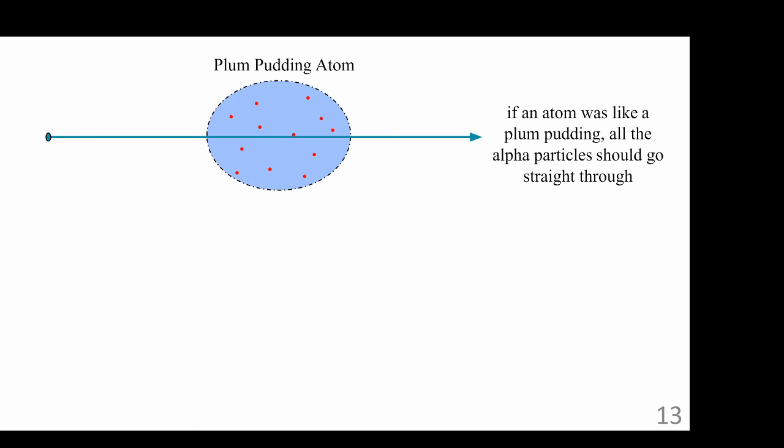Of course, Rutherford didn't know what an alpha particle was at the time. Alpha particles were just produced from a radioactive source and were ejected with a significant amount of energy as radioactive nuclei decay. The alpha particles were directed from the radioactive source toward an extremely thin piece of gold foil. Most of the alpha particles went straight through the film, but a very small fraction were deflected, some almost straight backwards.